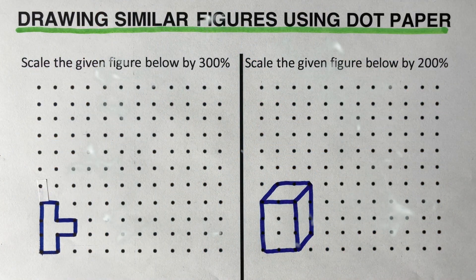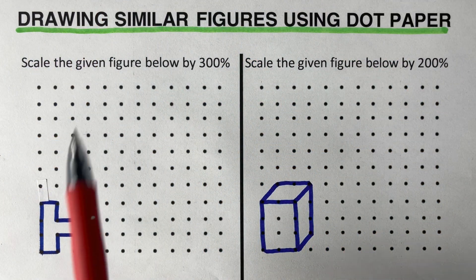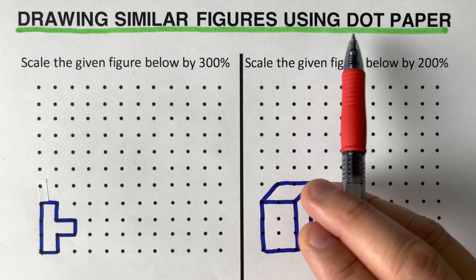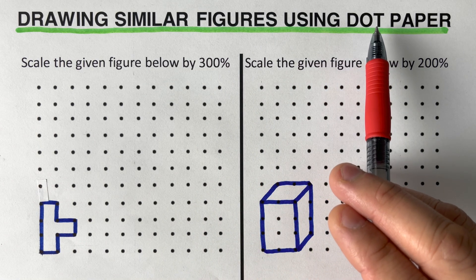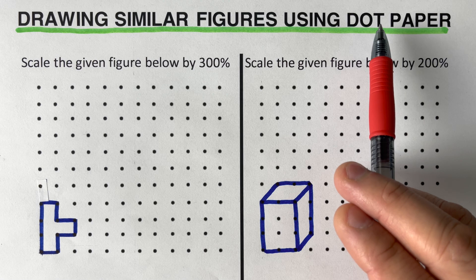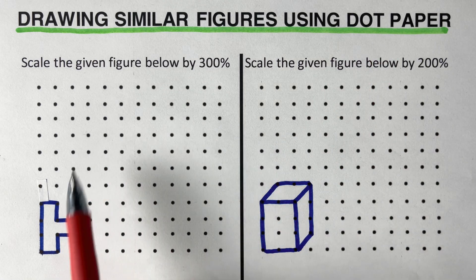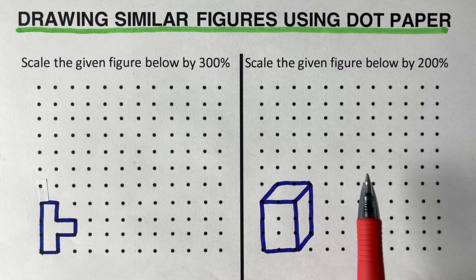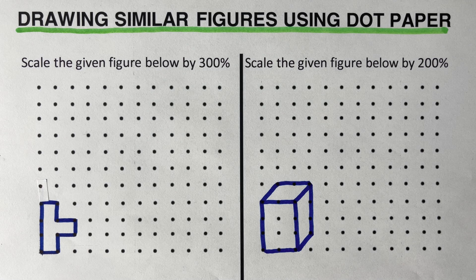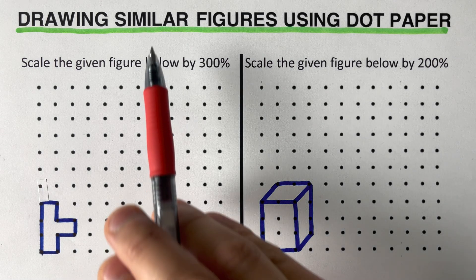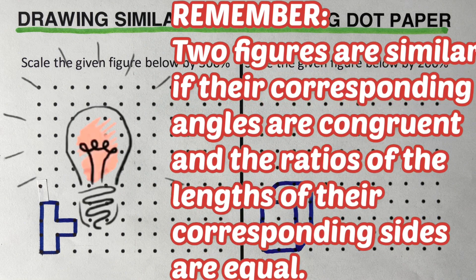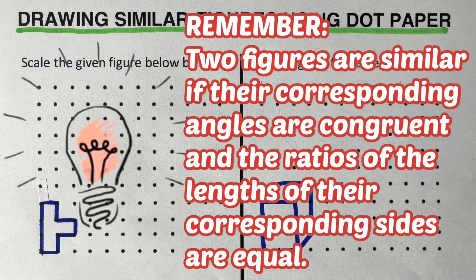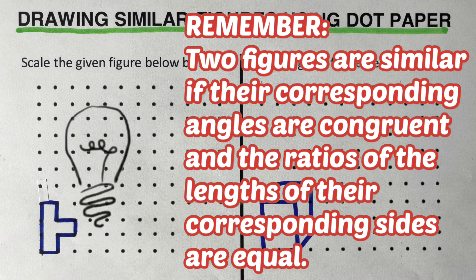Hello everyone. In this video we will be drawing similar figures using dot paper. The other name for dot paper is grid paper or dot grid paper. When we say similar figures, we say that two figures are similar if their corresponding angles are congruent and the ratios of the lengths of their corresponding sides are equal.